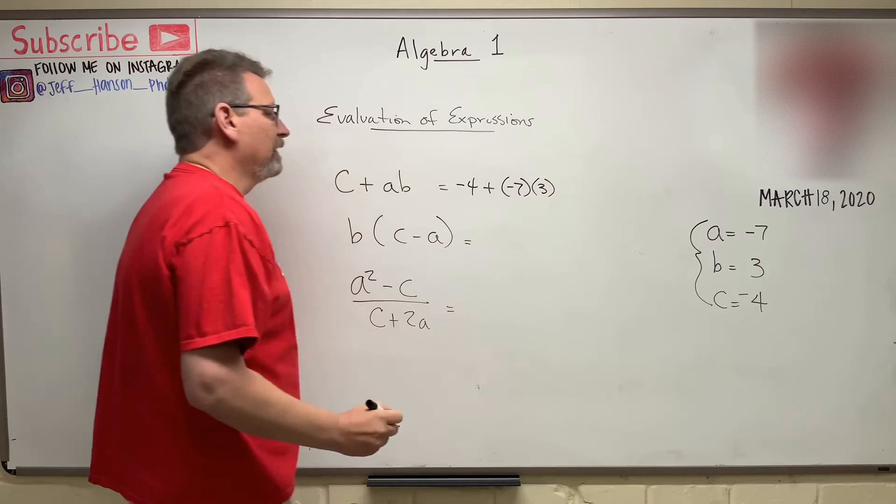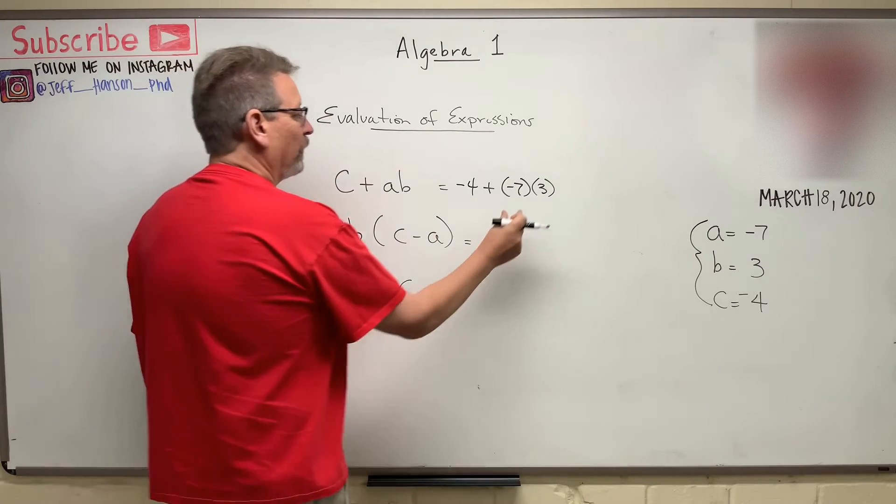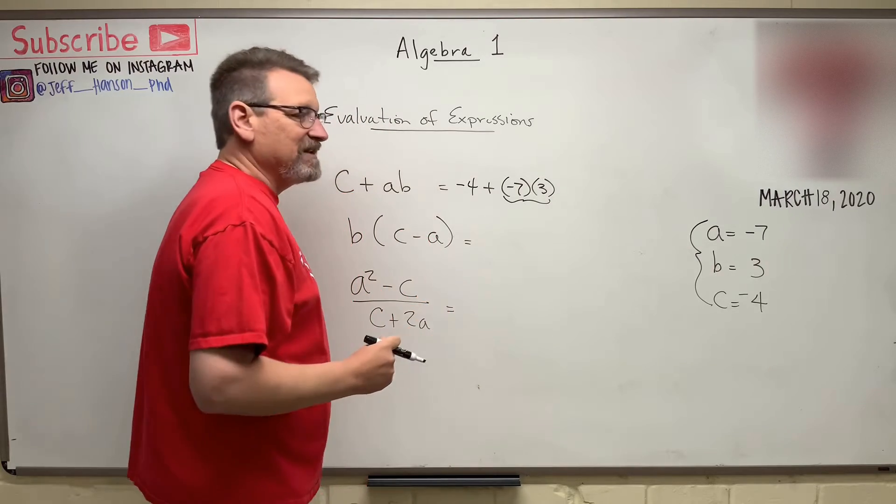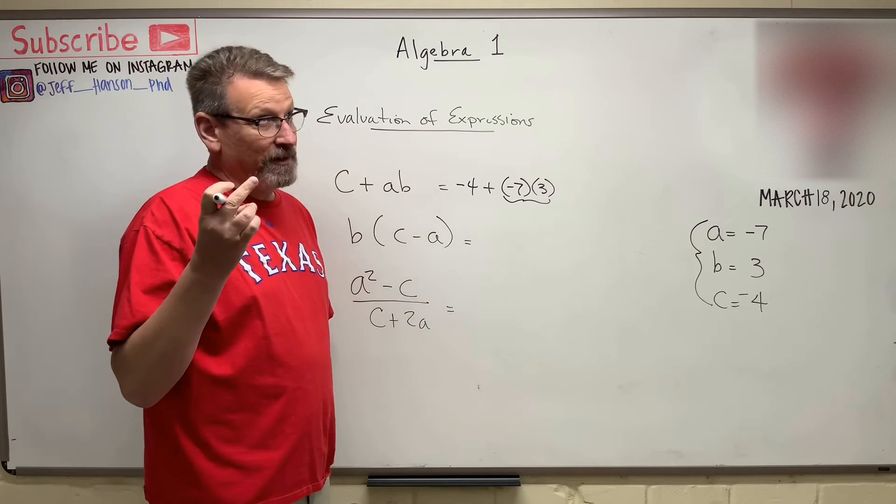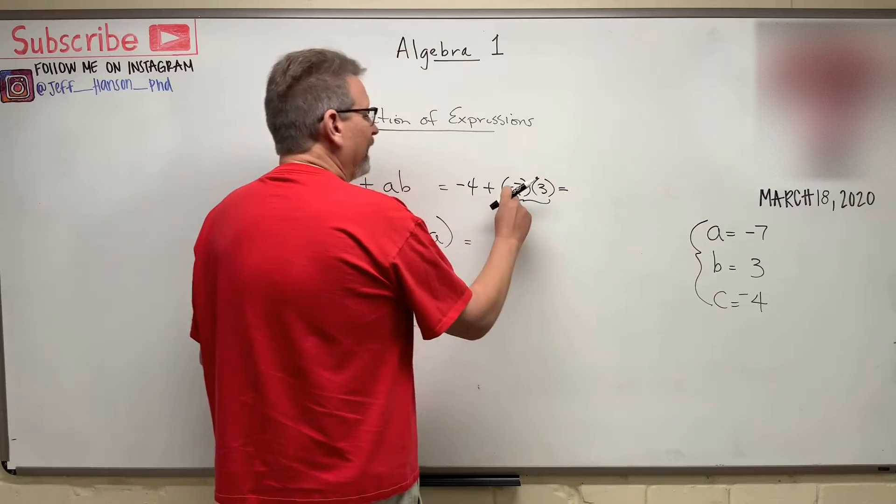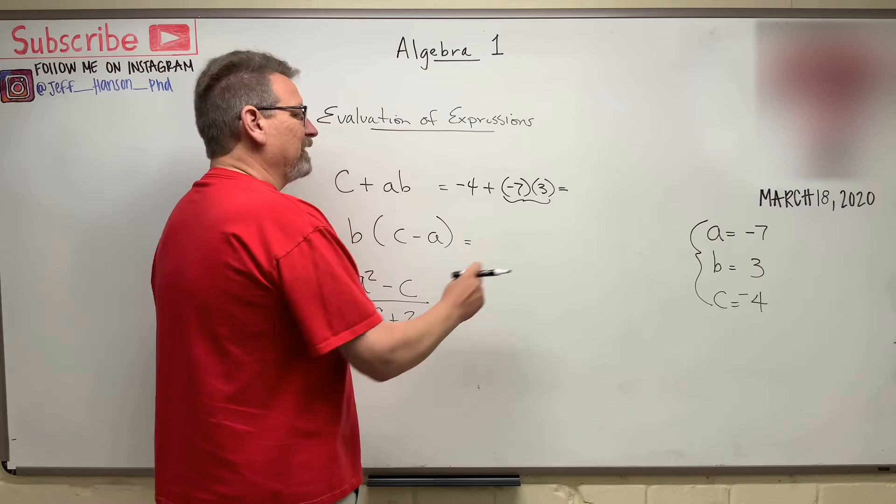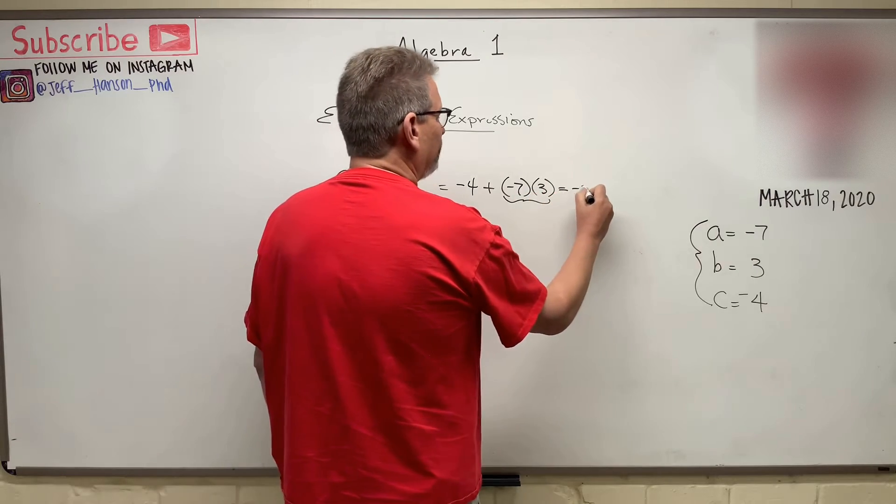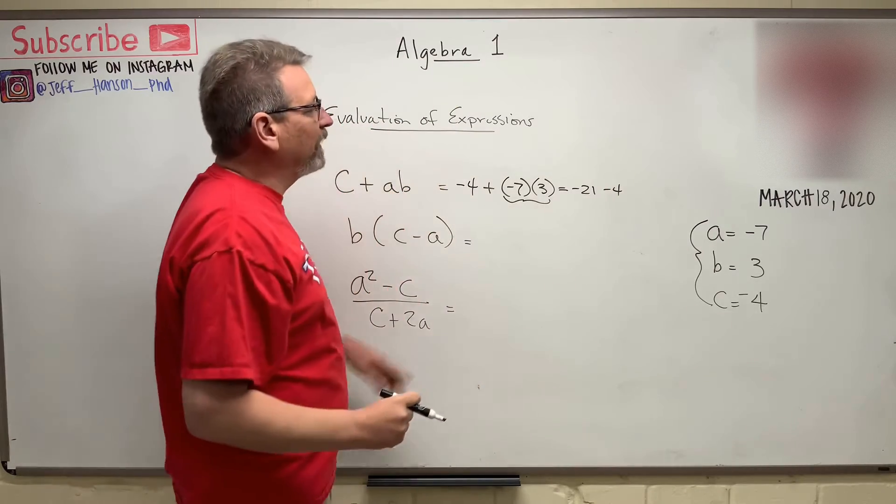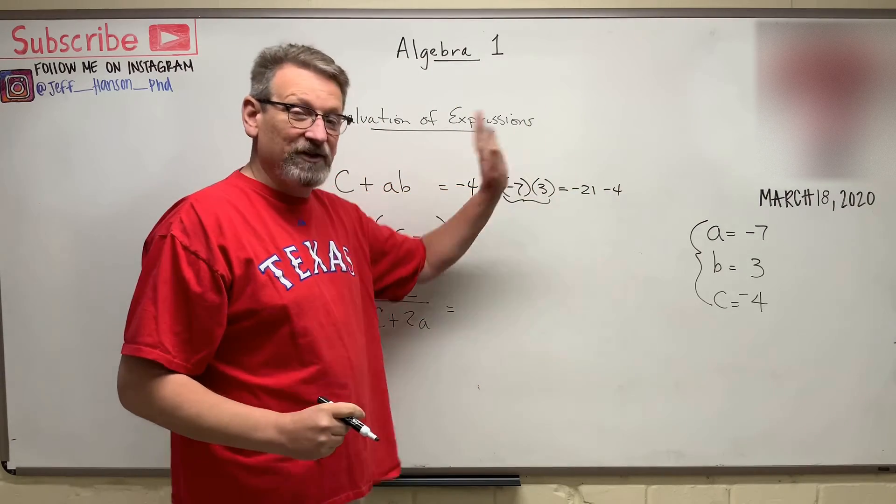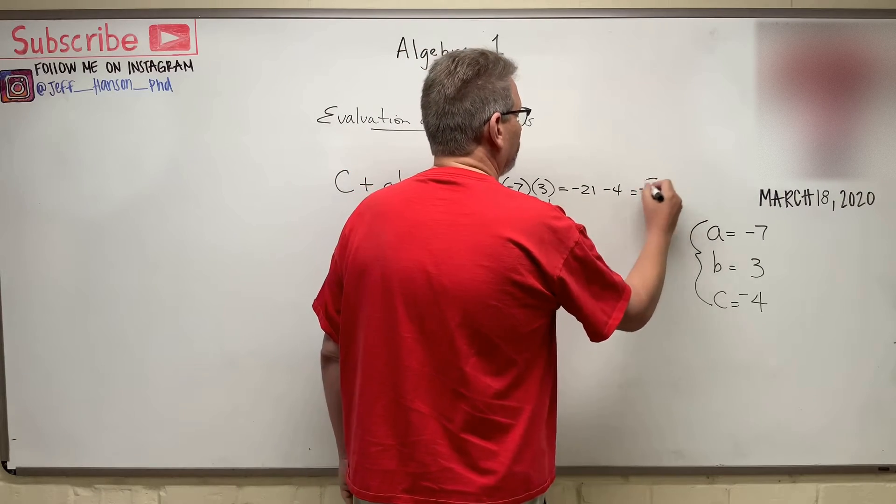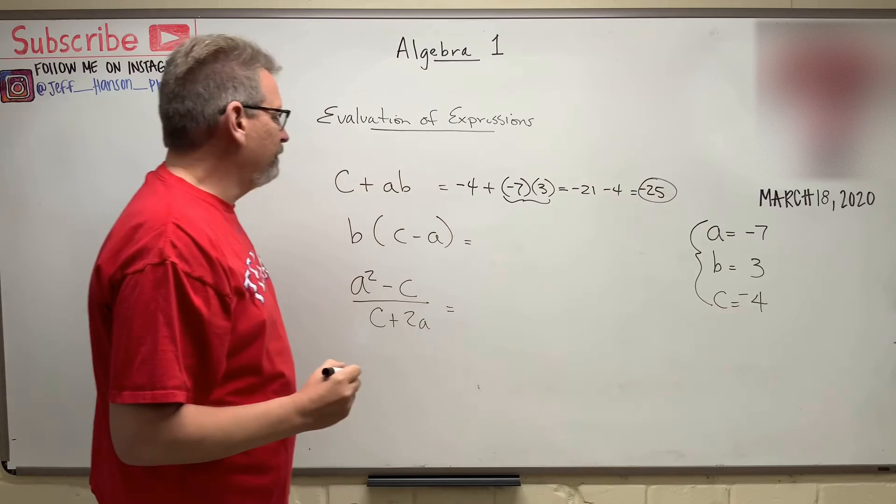Okay. And our order of operations says do the multiplication first. So we'll do this part first. Seven times three is to carry the nine, 21, right? And it's a negative 21 because there's a negative on there. So that becomes negative 21 and then minus four more. And what happens if we have a negative and minus another negative, it just gets more negative, right? So this becomes minus 25. And there's our answer for number one.